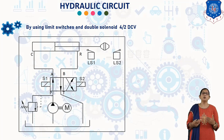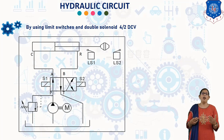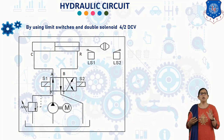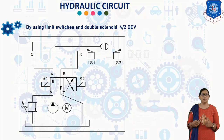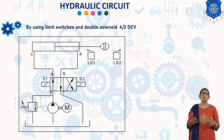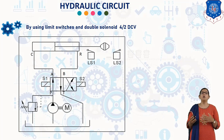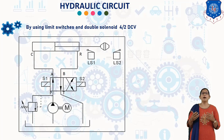Thus, automatic reciprocation is achieved. In the first position of the 4/2 direct control valve, oil under pressure flows from P to A and B to T. As the cylinder extends, by the end of the extension, the cam attached to the piston rod presses the limit switch Ls2. Hence, electric current flows to solenoid S2, and the spool of the 4/2 DCV shifts to the second position.